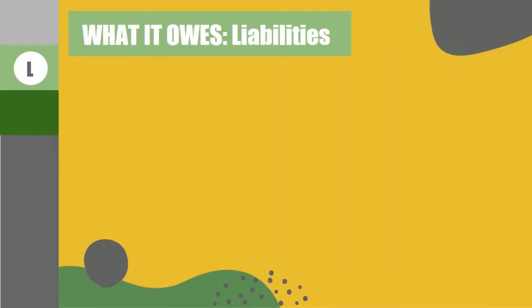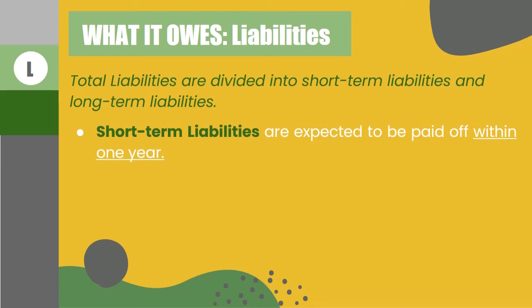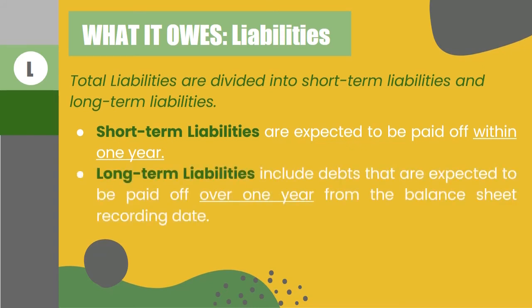Liabilities are divided into two categories: short-term liabilities and long-term liabilities. Ang short-term liabilities are expected to be paid off within one year — halimbawa nito ay yung mga accounts payable at loans. And the other one is long-term liabilities — yung pagkakautang na expected na bayaran na mas matagal pa sa one year mula sa date of recording.